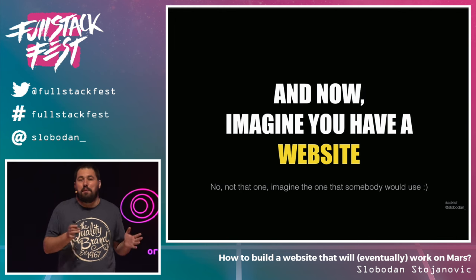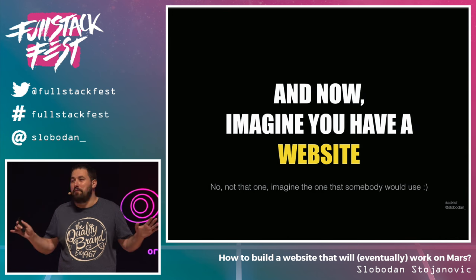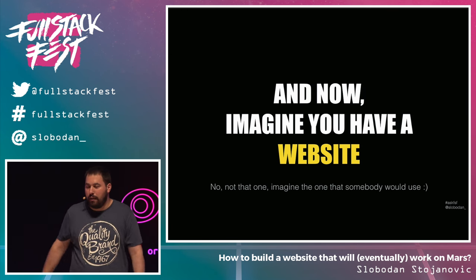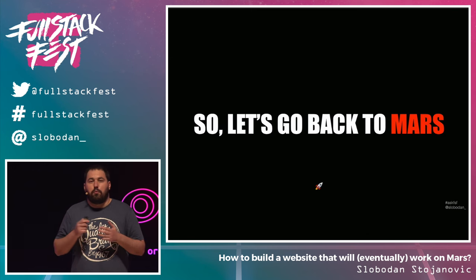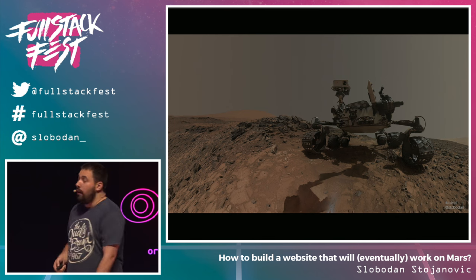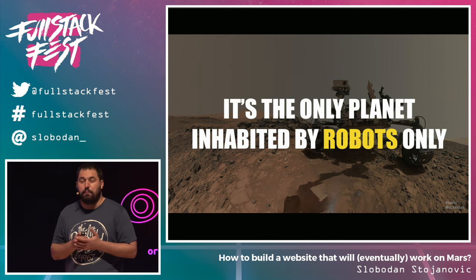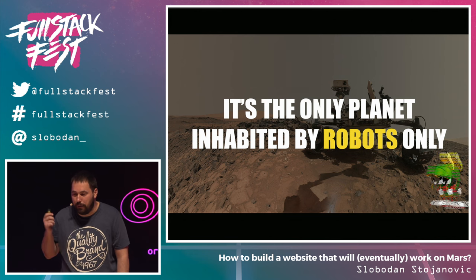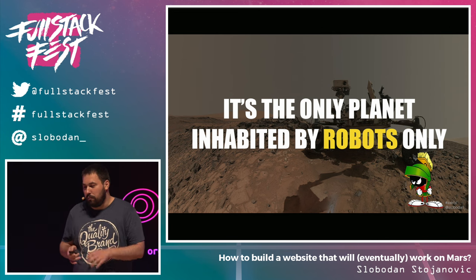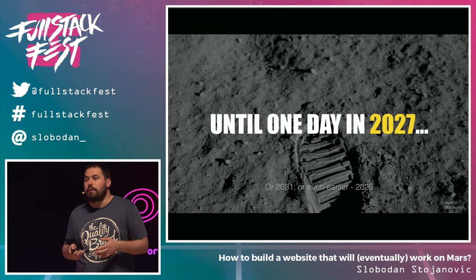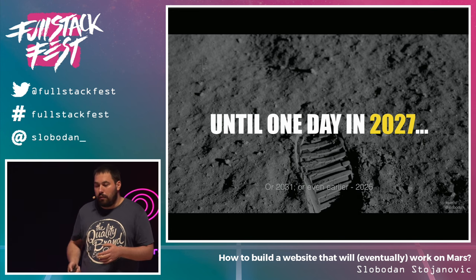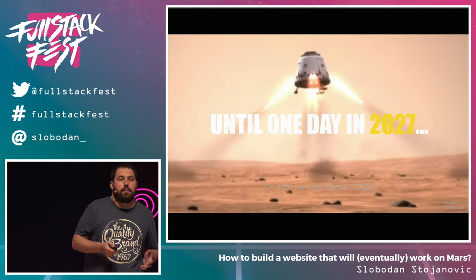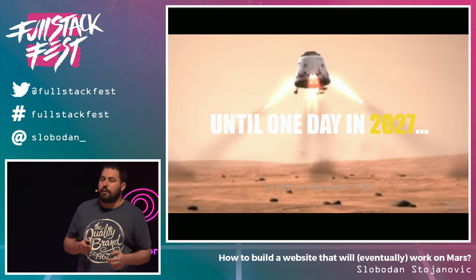Now, imagine you have a website — some kind of website useful to people. At the moment, Mars is the only planet inhabited by robots only, at least that we know about. But in the next 10 to 15 years, some people will start sending humans to Mars. That will be a slow process; they're planning to send the first humans to Mars in the next 10 to 15 years. You're not able to send humans to Mars any time you want because you need to wait for the planets to align.